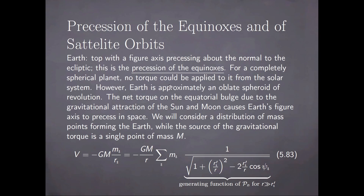For a completely spherical planet, no torque could be applied to it from the solar system. However, Earth is approximately an oblate spheroid of revolution. The net torque on the equatorial bulge due to the gravitational attraction of the Sun and Moon causes Earth's figure axis to precess in space. We will consider a distribution of mass points forming the Earth, while the source of the gravitational torque is a single point of mass capital M. Then the gravitational potential energy of the Earth will be a sum of the interaction terms between the Sun and all of the particles which are assumed to constitute the rigid top, which is the model of the Earth.